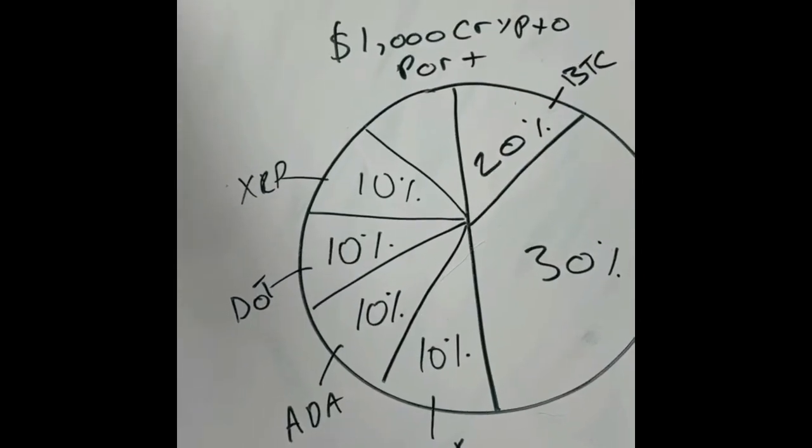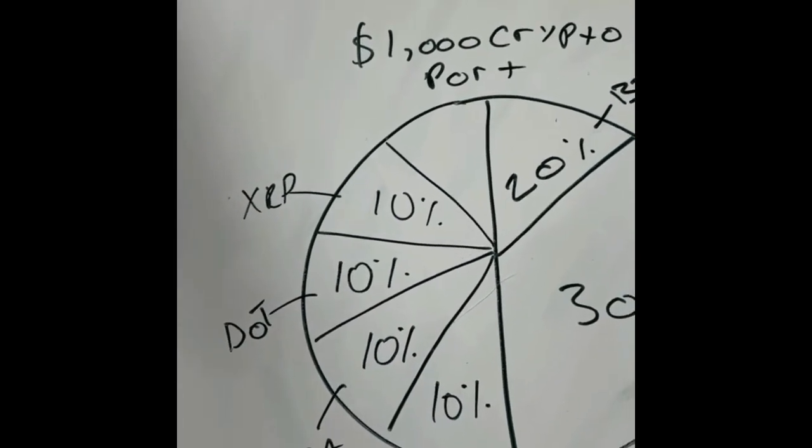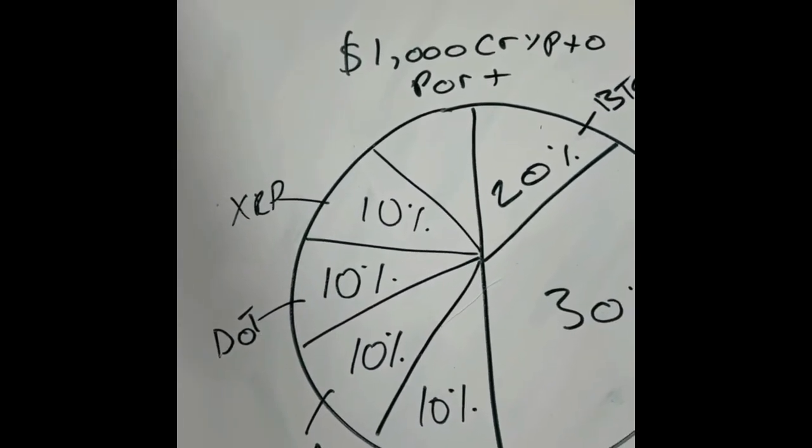Next, I would give a 10% allocation to XRP. Essentially, XRP hopes to replace the old, adequate SWIFT system.